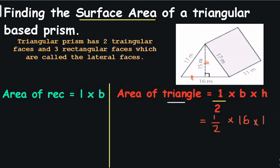If I can cancel any number, I will cancel. For example, 2 goes into 2 once and 2 goes into 16 eight times. So 8 multiplied by 15 is equal to 120 square meters.